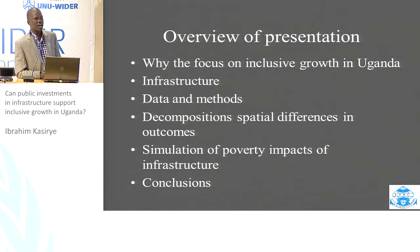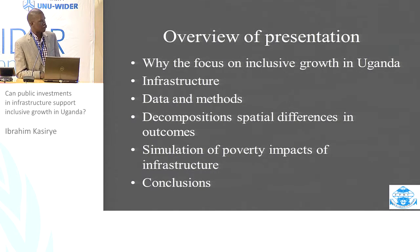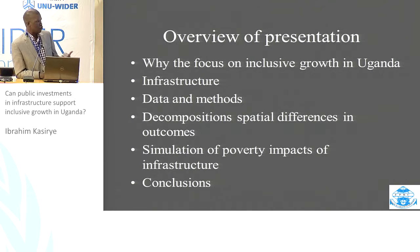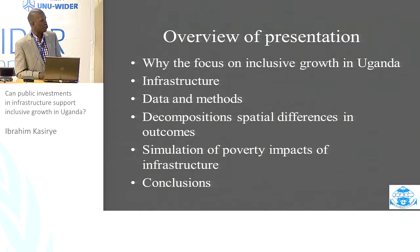The infrastructure here is mainly roads, health facilities, agricultural input markets, and related items. Then we discuss the data we use, the decompositions that try to explain to what extent infrastructure explains the spatial differences in poverty in Uganda. We also try to simulate what would happen to poverty if the infrastructure in the richest region is accorded to the poorest region, and then the conclusions.